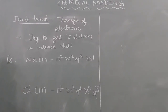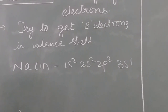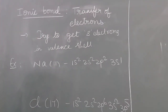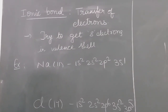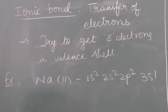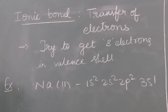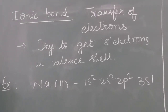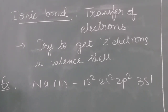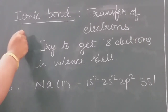We are learning about chemical bonding. There are many bonds, and depending upon the nature of the bond, they are divided into categories. Some bonds form due to sharing of electrons, and some form due to transfer of electrons. First of all, we are looking at ionic bond.